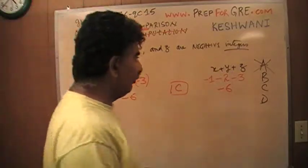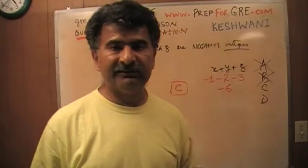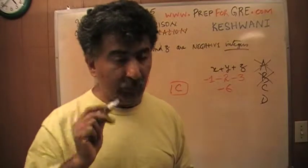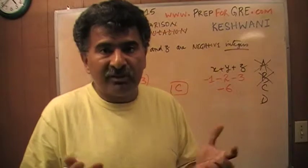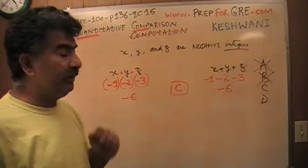It rules out B because had I picked B, I would have been claiming that the quantity in column B is always greater. The quantity in column B cannot be always greater because I just found an instance where it is not. It rules out B.